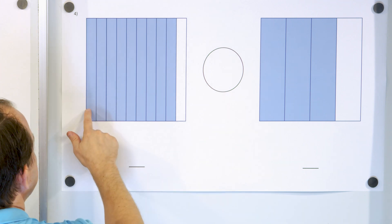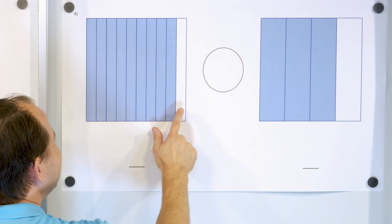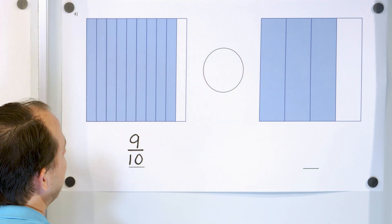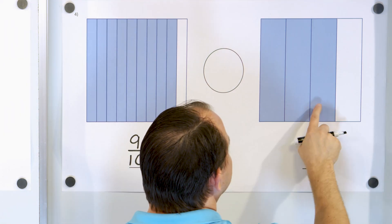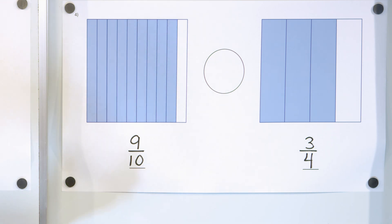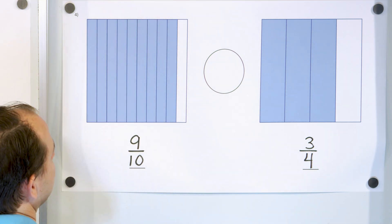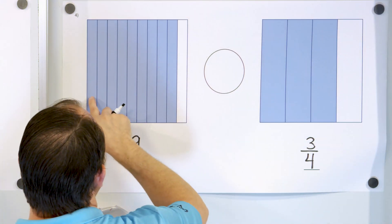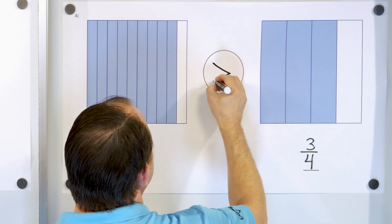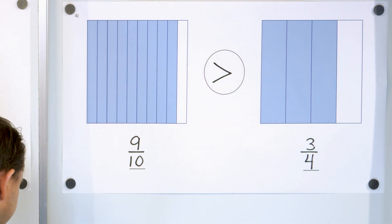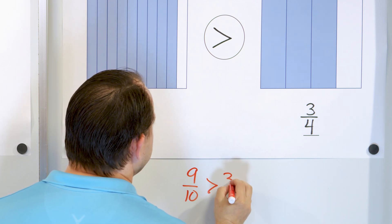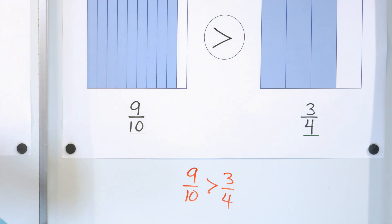Let's take a look at the next one. We have 1, 2, 3, 4, 5, 6, 7, 8, 9, 10 slices total, but I only have 9 of them — so the fraction is 9 tenths. And here we have 1, 2, 3, 4 pieces but only have 3 — so it's 3 fourths. The amount of material here is way bigger than what I have over here, so 3 fourths is the smaller amount. The arrow goes to the smaller number. We say 9 tenths is greater than 3 fourths.